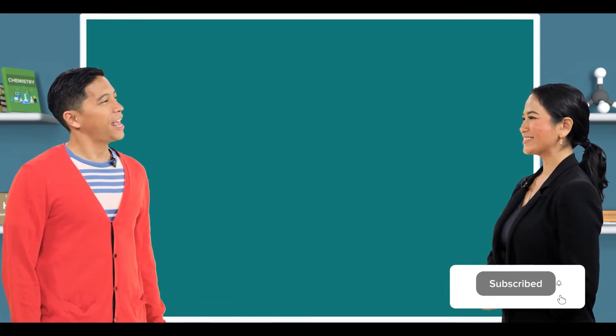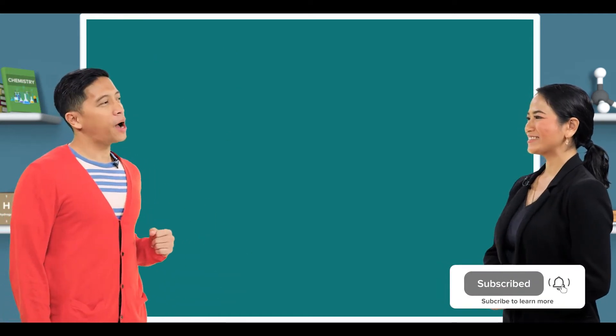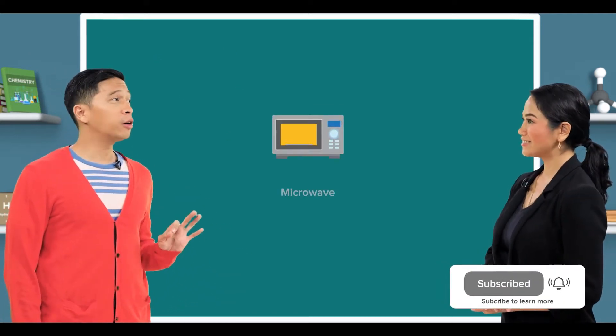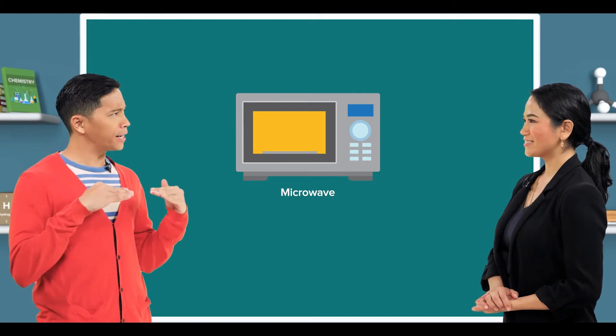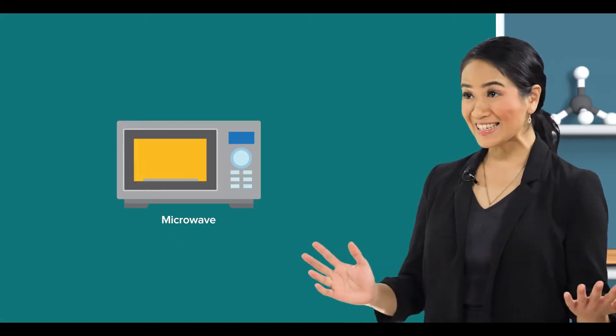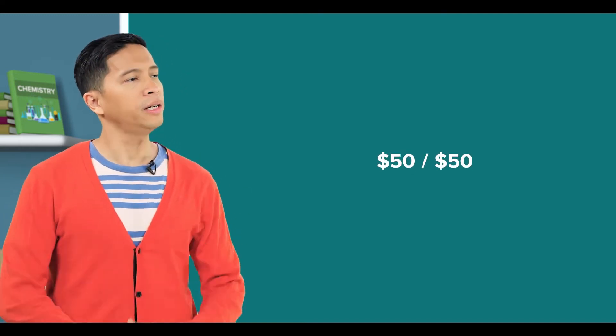Hi teacher, I managed to buy a very good microwave oven at half price. That's nice. Did you buy it on sale? No, not on sale. Then how do you get it for half price? Because I shared with my brother. The microwave oven cost $100 and we paid $50 each. We now share the microwave oven.